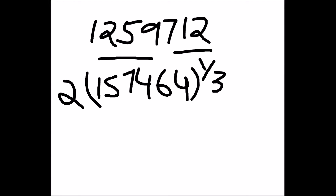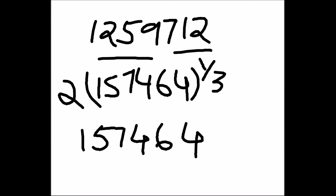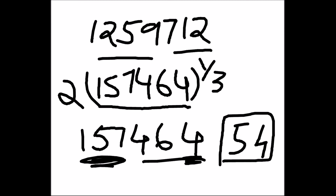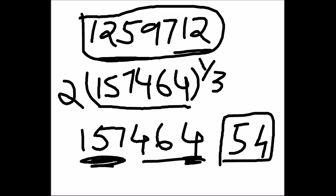If we multiply the cube root of 157464 by 2 (since we took out the factor of 8), we'll get the final answer. Dividing 157464 into two parts: it ends with 4, so its cube root ends with 4. And 157 lies between 5 cubed (125) and 6 cubed (216), so we take the lesser value, 5. The cube root of 157464 is 54. Multiplying 54 by 2 gives 108, which is the cube root of 1259712.